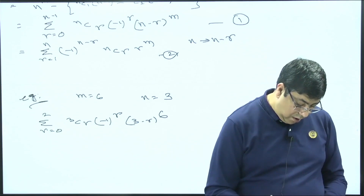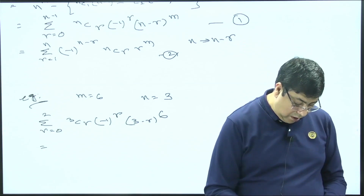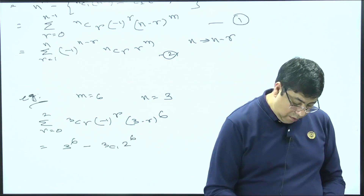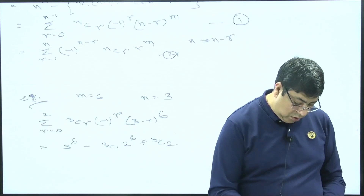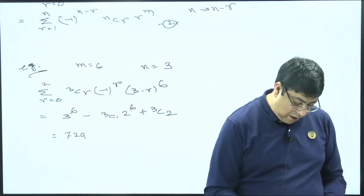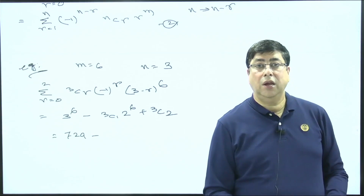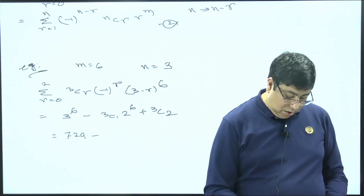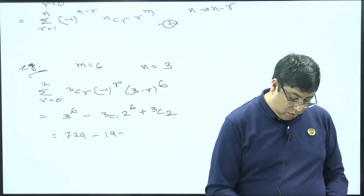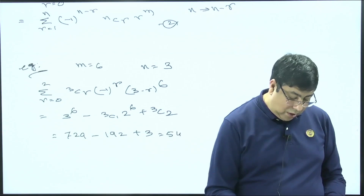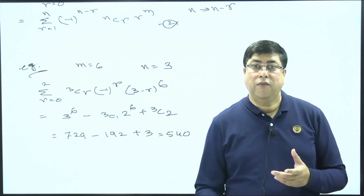Computing: 3^6 = 729, minus 3C1·2^6 = 3×64 = 192, plus 3C2·1 = 3. So total number of onto functions = 729 − 192 + 3 = 540.